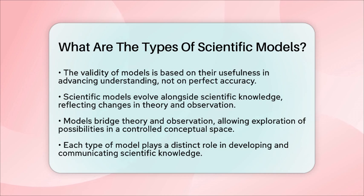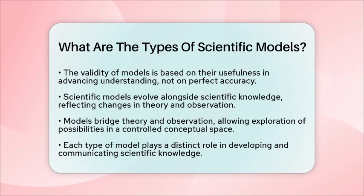In summary, scientific models can be categorized by what they represent — phenomena, theories, or data — and by their form: visual, mathematical, or computational. Each type plays a distinct role in developing and communicating scientific knowledge, highlighting the relationship between scientific theories and the world they aim to describe.